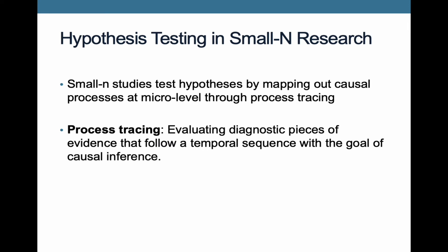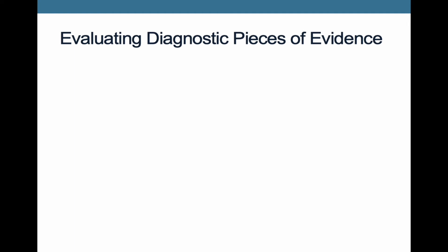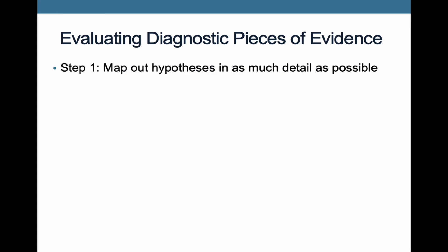I'm going to explain each of those by going back to the example of marijuana legalization in Maine versus New Hampshire. The first part is evaluating diagnostic pieces of evidence. What you want to do is take those hypotheses — we had three: one about people in favor of legalization, one about groups opposed to it, one about politicians — and map them out in as much detail as possible. This isn't just identifying independent variable, dependent variable, and one intervening variable. You want to break it down into as many steps as possible, with each little intervening variable along the way that ultimately leads to the outcome.